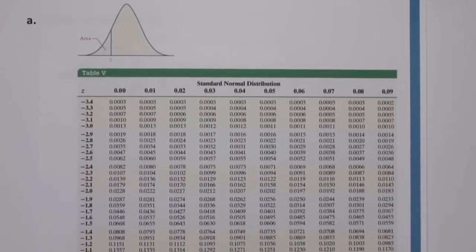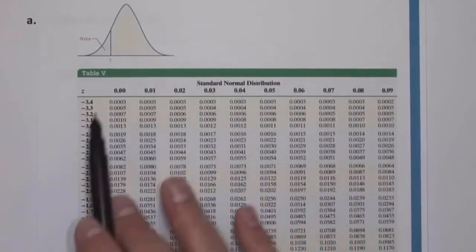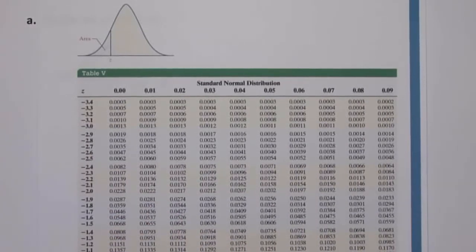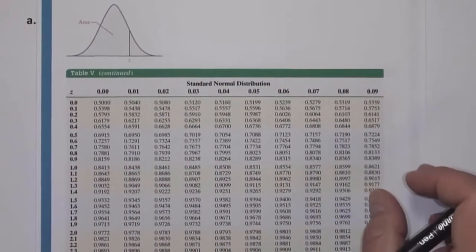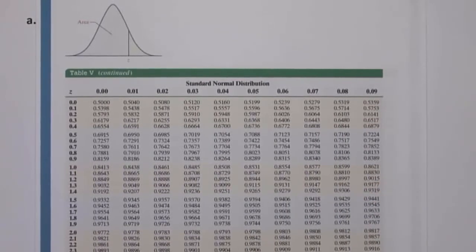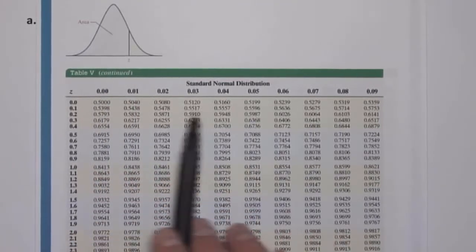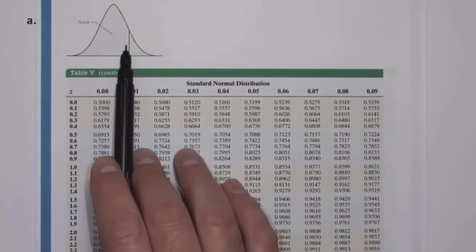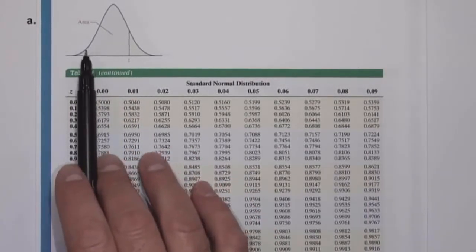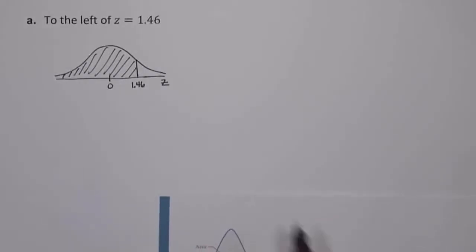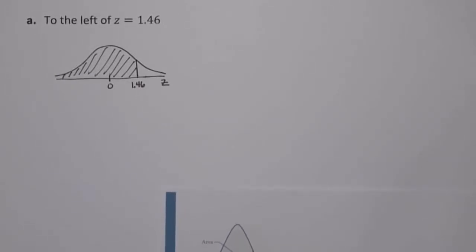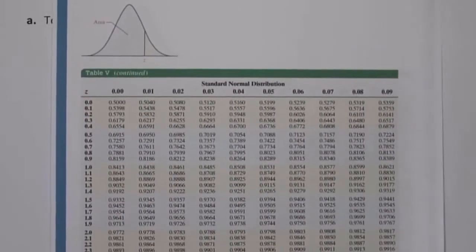In the appendix of your book, on page A-11, we have a table for negative z scores, and on page A-12, we have the table for positive z scores. The table gives us the area that is to the left of a given z score. For our problem, the z score is 1.46, which is on the positive side of the standard normal table. So I need to look up 1.46, and the table will tell me the area to the left of 1.46.